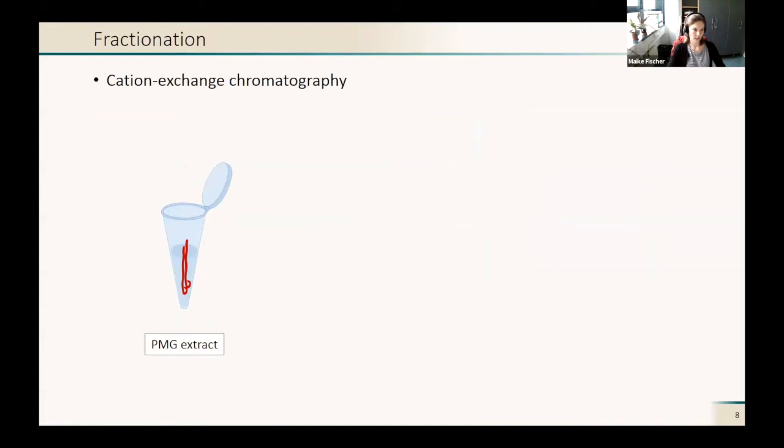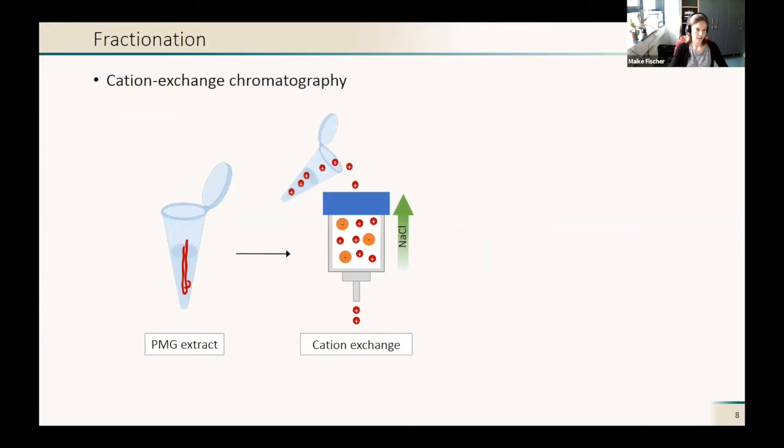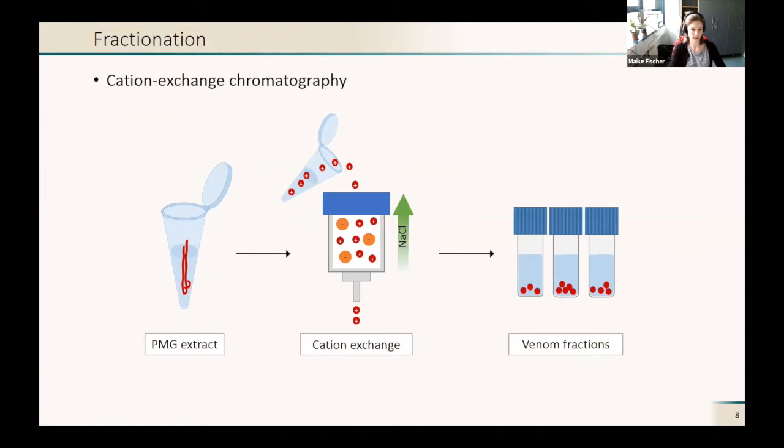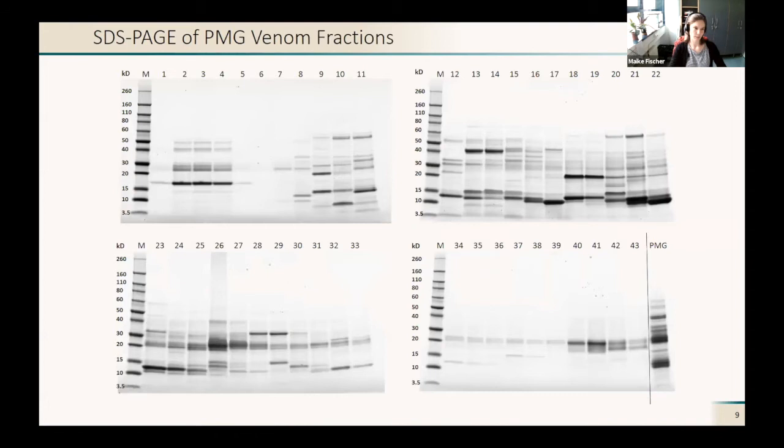For the fractionation, we used cation exchange chromatography. We took our PMG extract, and in our buffer, our proteins were mostly positively charged. Then they bound to the negatively charged column. With an increasing sodium chloride concentration, we could step by step elute the proteins and collect different venom fractions.